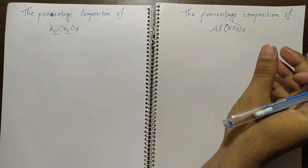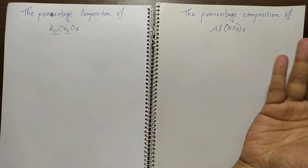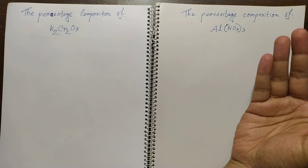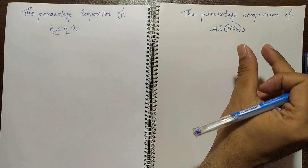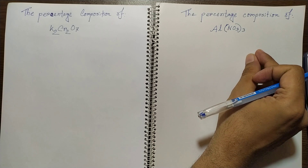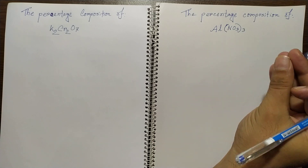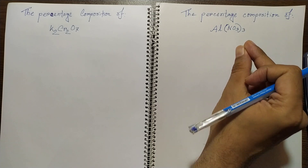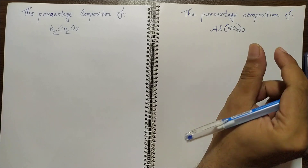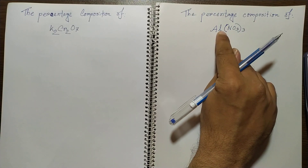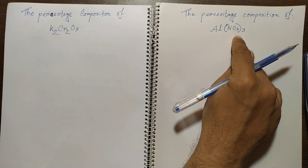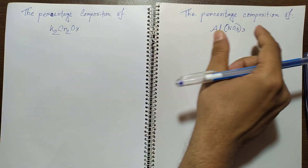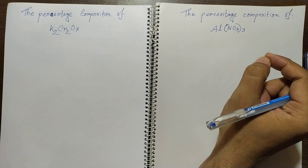In this video I'm going to explain the percentage composition of elements in compounds. The gram measurement of an element present in a hundred gram compound is called the percentage composition of that element. The molecular formula of the compound is the source used to determine the percentage composition of various elements in the compound.